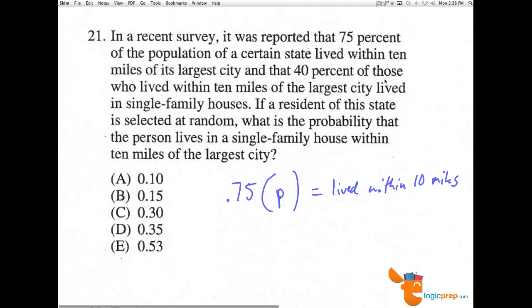And that 40% of those, that's the trick here, of those that we just talked about, 40% of these 0.75P live in single-family houses. So this is 10 miles, live within 10 miles, and single-family houses.